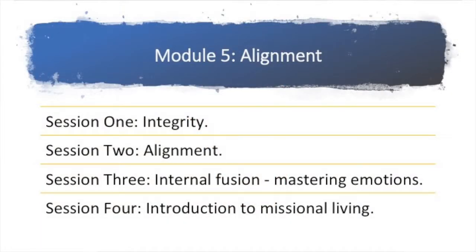Module 5 is a module we're calling Alignment. Session 1 is about integrity — the integrity conversation. Session 2 is alignment, which is what we previously called radical obedience. In alignment, it's about aligning with the way of Jesus, with our guiding principles, with what we've given our word to — to other people and to ourselves.